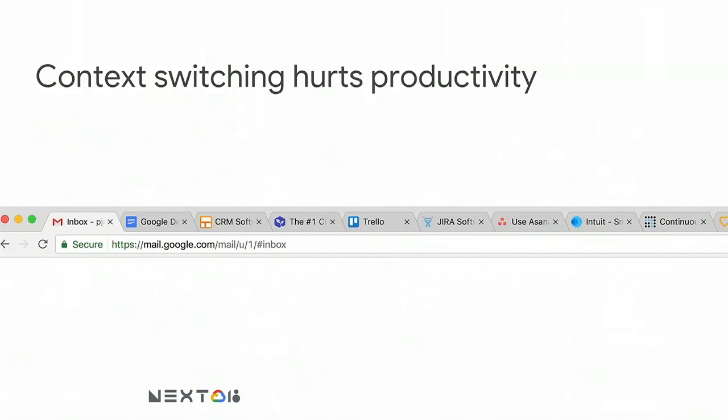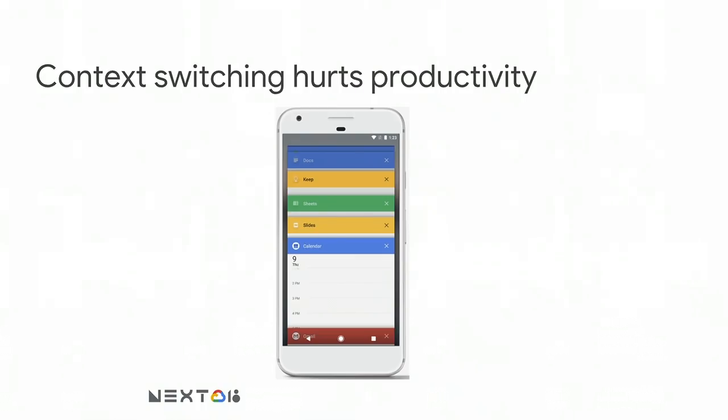In doing each of these tasks, users spend a bunch of time opening up a new tab or app, setting up the right context, taking some action, and then returning back to their email. What's more, they also run the risk of getting distracted, and it can take a while to get back in the zone. We've all seen Chrome windows with 10 or 40 or 100 tabs open because the user is constantly switching between different contexts. This is even more of a problem on mobile, where app switching is a bit more cumbersome.